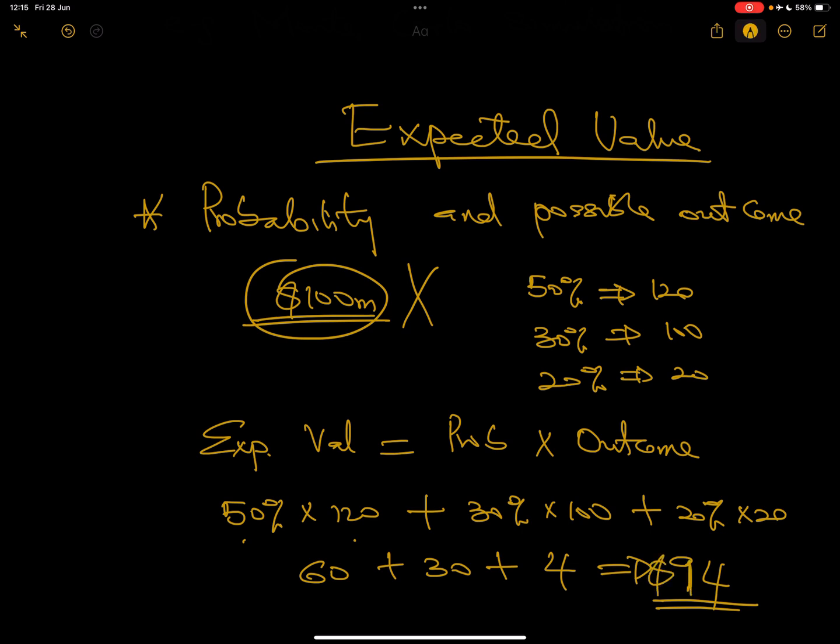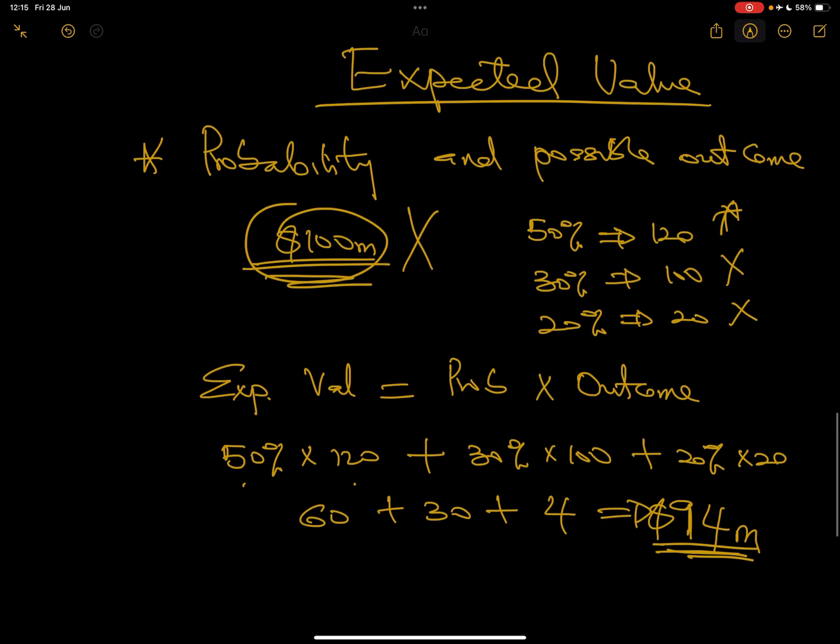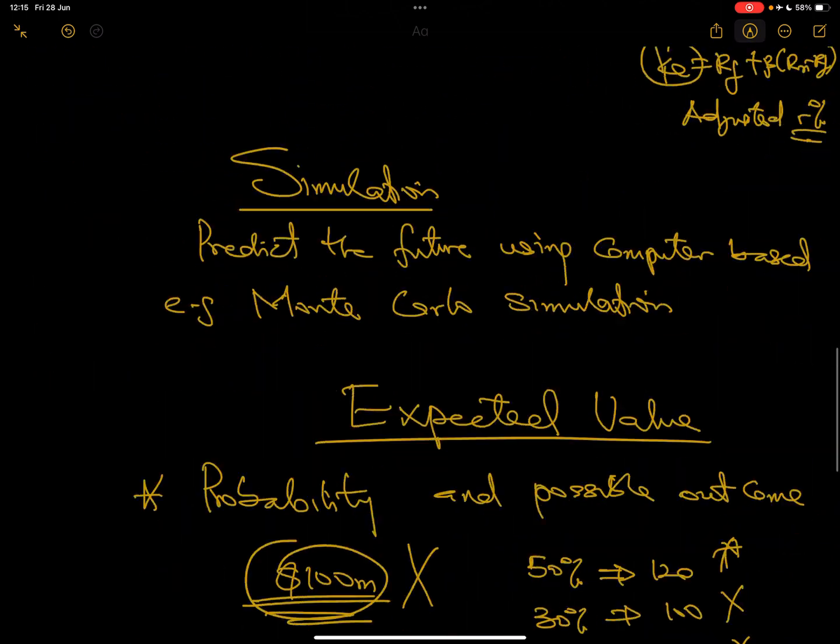Which means if you want to project your cash flow for that particular year, you should be using 94 million dollars, not 100 million dollars, not 120, not 100 or 20, but rather 94 million. That is what expected value model is looking at - to try and bring you to actual as much as possible by averaging all the possibilities and the outcomes. So that is it for risk and uncertainty. In the next video I will deal with sensitivity analysis as a separate topic, and we're going to solve one or two questions on it. Until then, bye.